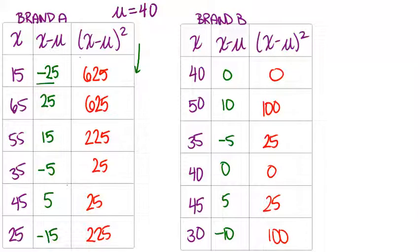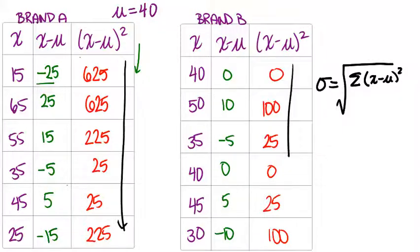Now that we have all of our squared values, let's remind ourselves what the formula is for standard deviation. This is the symbol for standard deviation, a Greek letter called sigma. Standard deviation is the square root of a big calculation. We will have to sum up all of our squared x minus mu values, so that's the sum of everything in this last column for each brand, and then divide that by n and then take the square root of everything.